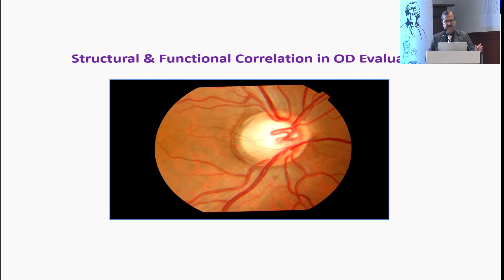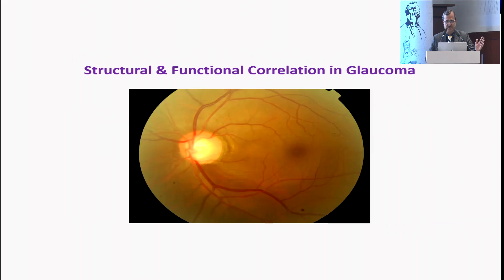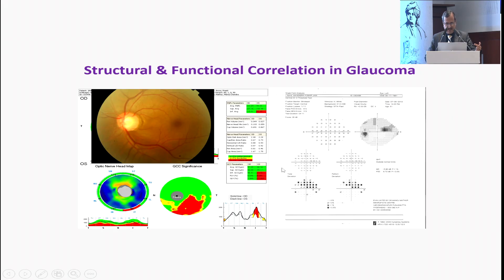Always look out for temporal pallor — you won't be surprised if you get a hemianopic component. Correlation with the OCT: if you see this disc, there is an inferior temporal notch with a clear-cut nerve fiber layer defect. On the OCT, there is a significant inferior temporal defect. The GCC correlates perfectly, and you see a superior arcuate defect with a focal defect in the nasal step. This is exactly what structural and functional correlation needs to look like.